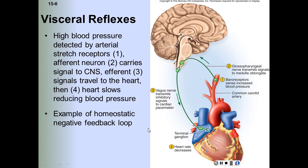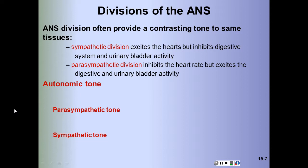The ANS has two subdivisions: the sympathetic and the parasympathetic divisions. These two divisions often innervate the same target organs and have cooperative or contrasting effects. The sympathetic division increases alertness, heart rate, blood pressure, airflow, blood glucose concentration, and blood flow to muscles, while reducing blood flow to the skin and digestive tract. The parasympathetic division is associated with reduced energy expenditure and normal bodily maintenance — the rest-and-digest state.